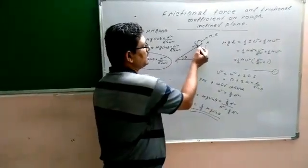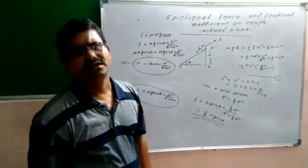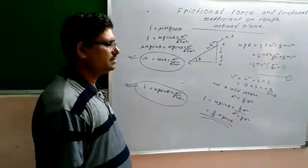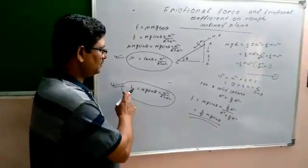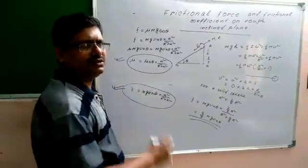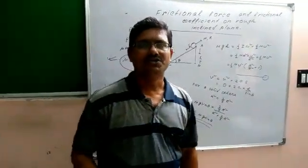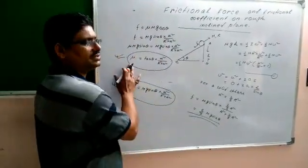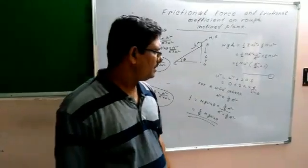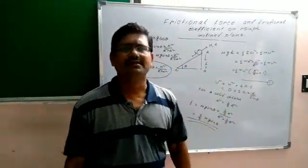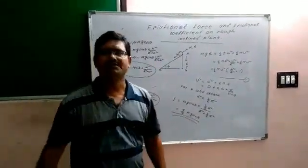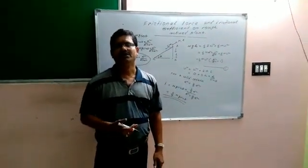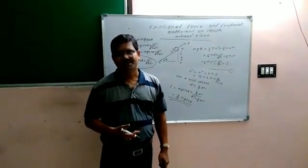The g sine theta force acts along the inclined plane, and in the opposite direction there is a frictional force. So the equation of motion can be set up. From this equation of motion we can get the value of frictional force, and then we can also get the frictional coefficient. Students, this will help immensely to calculate frictional force and friction in any examination. If this helped you, please comment on this channel. Thank you everybody.